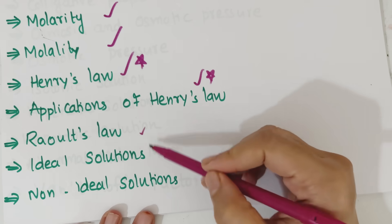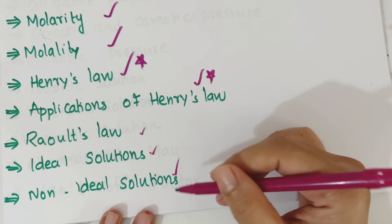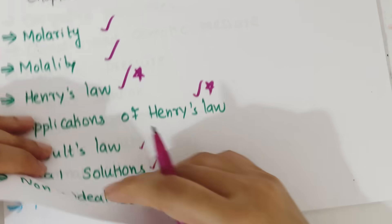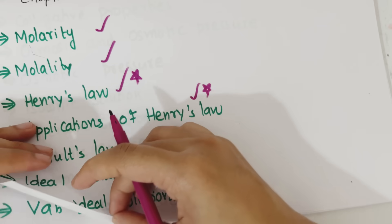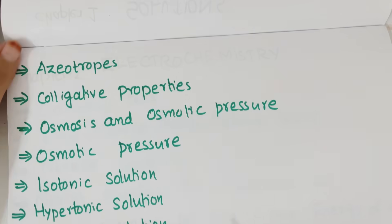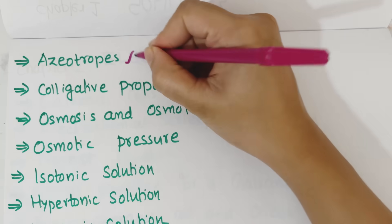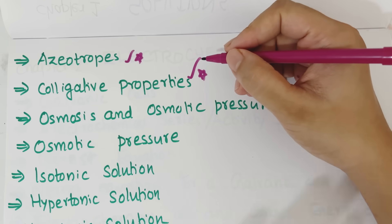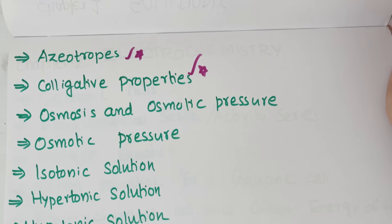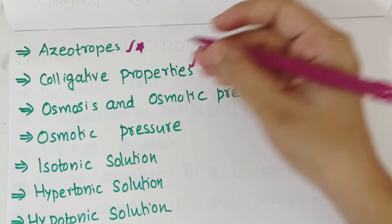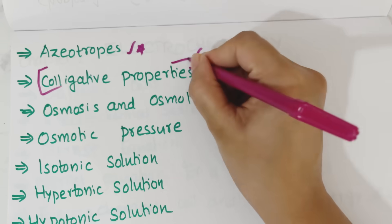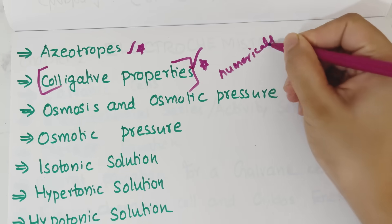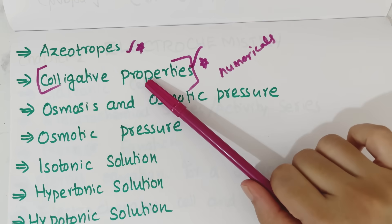This is the course on solutions — non-ideal solutions — with graphs and examples. In this chapter, we have an important topic: what is an azeotrope? We have also talked about colligative properties — what is osmosis, what is osmotic pressure, what are colligative properties.